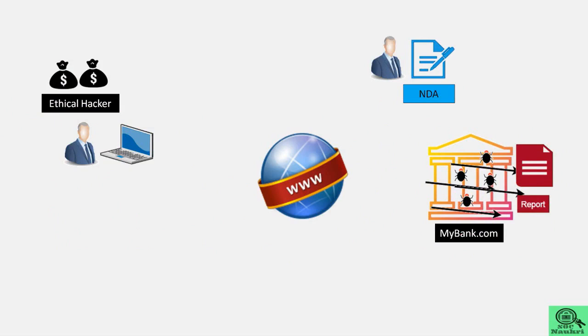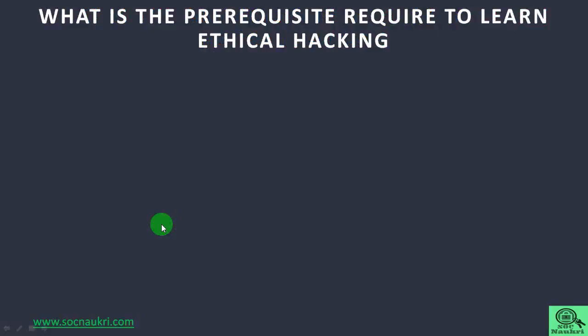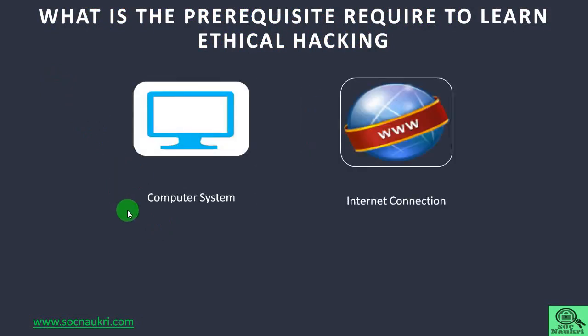Ethical hacking is breaking into a machine with proper authorization from the owner before penetrating the network. What are the prerequisite requirements to start learning ethical hacking? The prerequisite is to have a computer system with a good internet connection to learn all the methodology and process used by a hacker. If you are looking to learn ethical hacking, a programming language is helpful but not strictly required, as there are different jobs available in the industry for which candidates do not need to be good in programming — instead, they can have a good understanding of different tools, technology, cyber attack techniques, and remediation.